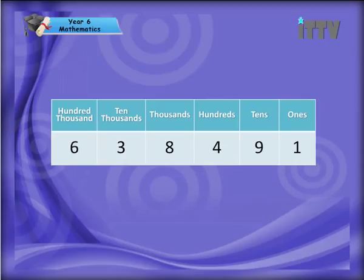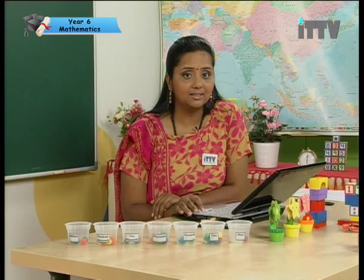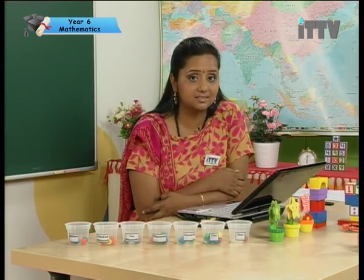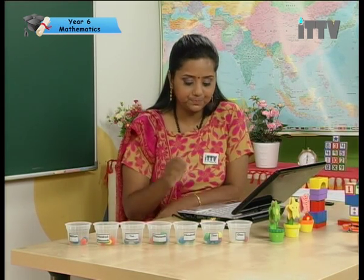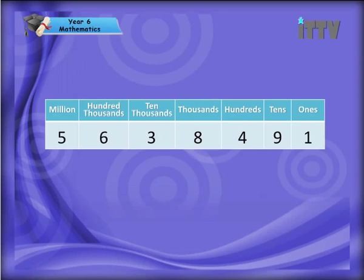Let's do it together: six hundred and thirty-eight thousand four hundred and ninety-one. Very good! Now in Standard Six, like I mentioned earlier, you'd be doing the million. It's an extra figure in front of the hundred thousand. A million has six zeros. Let's read it together: five million six hundred and thirty-eight thousand four hundred and ninety-one.